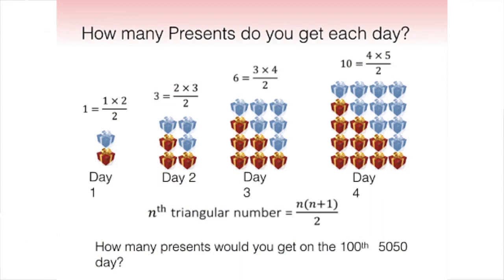This is a useful thing to do, because these are so easy to count — it's much easier to count things arranged in rectangles. For the first one, I do 1×2 and then half it to get the actual number of presents. Then 2×3 and half it, and so on. The number of gifts along the bottom is always just the day. So what would the nth triangular number be? Can anyone tell me the formula? N times n plus one over two — absolutely perfect. N is the day, so that's how many gifts along the bottom; n plus one is the gifts along the side. You multiply them, then half it to get the actual number of gifts.